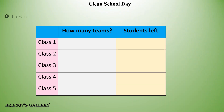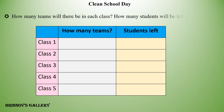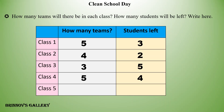How many teams will there be in each class? How many students will be left? Class 1: 5 teams, 3 students left. Class 2: 4 teams, 2 students left. Class 3: 3 teams, 5 students left. Class 4: 5 teams, 4 students left. Class 5: 2 teams, 6 students left.